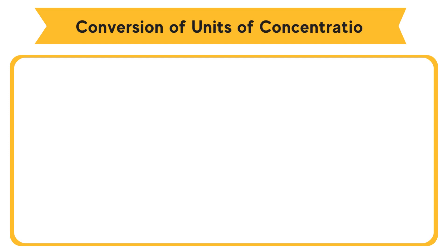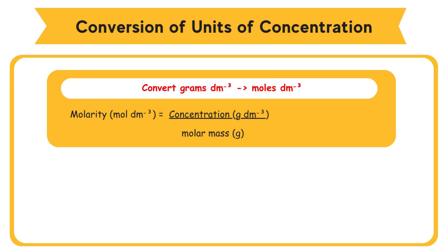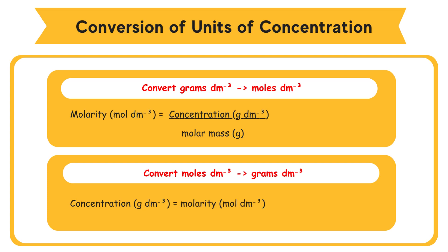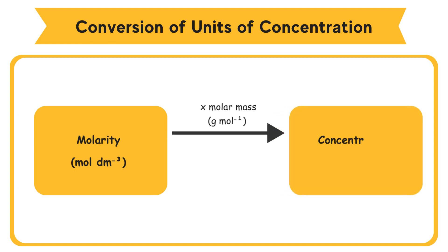Conversion of units of concentration. To convert g/dm³ to mol/dm³: Molarity (mol/dm³) equals concentration (g/dm³) divided by molar mass (g/mol). To convert mol/dm³ to g/dm³: Concentration (g/dm³) equals molarity (mol/dm³) times molar mass (g/mol).